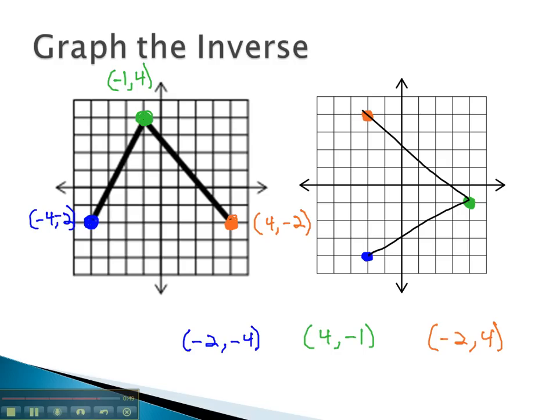As you can see, we can quickly graph the inverse of a function by identifying a few key points and switching the order of the coordinates, because the inverse simply switches x and y.